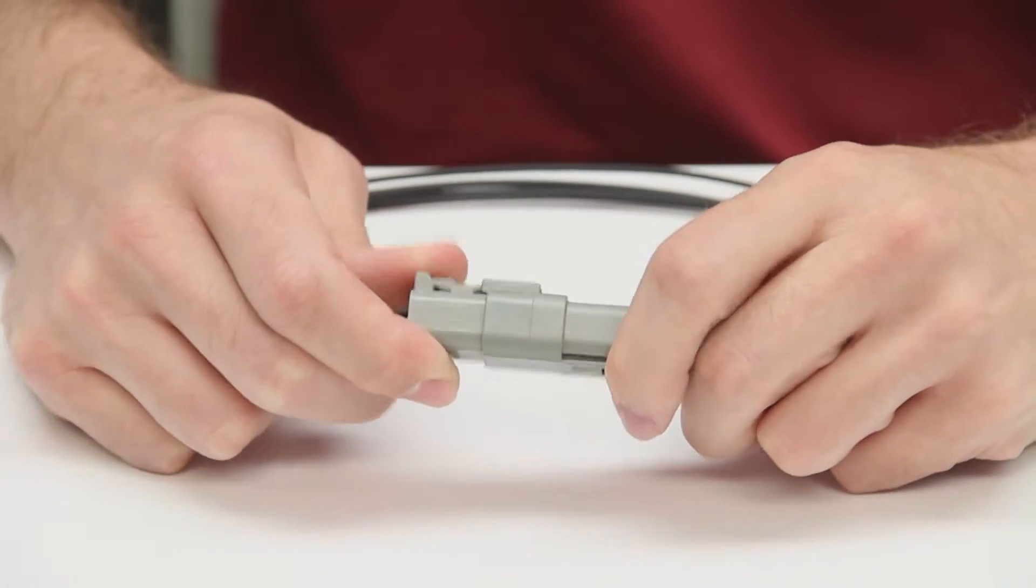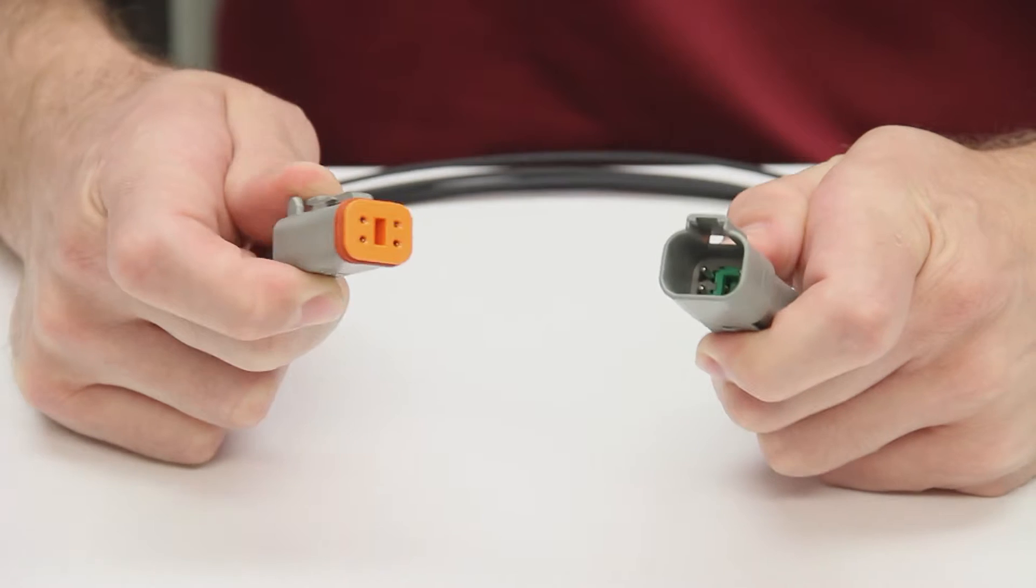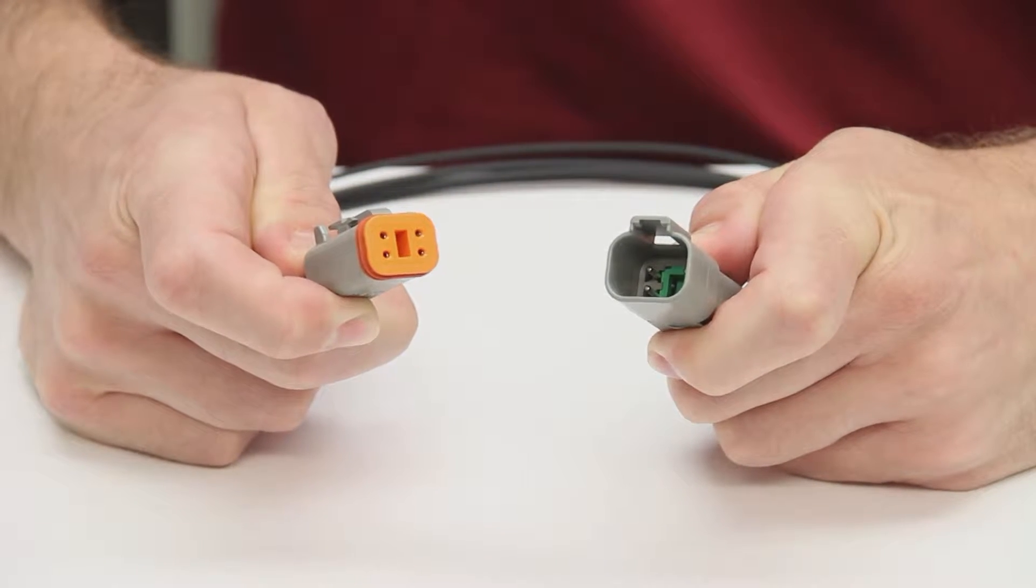DT Series connectors are heavy-duty, environmentally sealed connectors. They use wedge locks which snap into place and keep the contacts aligned correctly.